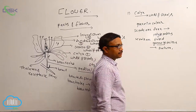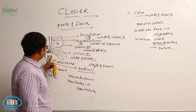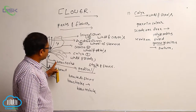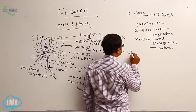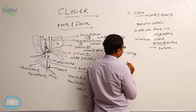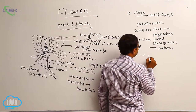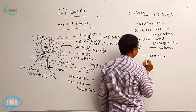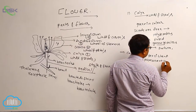What is the use of calyx? Calyx provides protection to the flower when the flower is in bud condition. The outer layer is known as calyx. Generally after fertilization, calyx falls off. But in some plants, calyx is persistent — meaning permanent calyx.